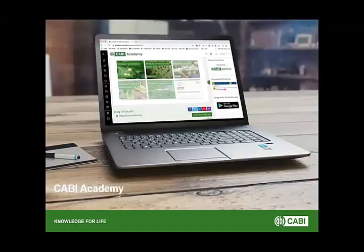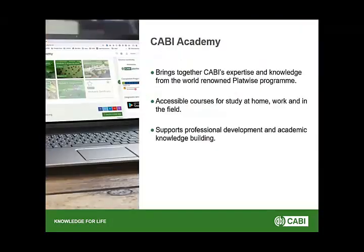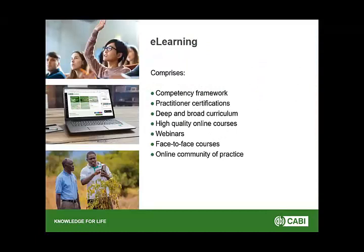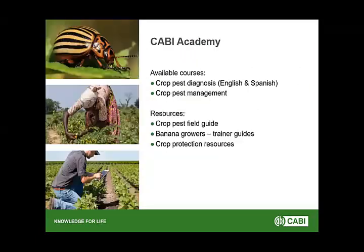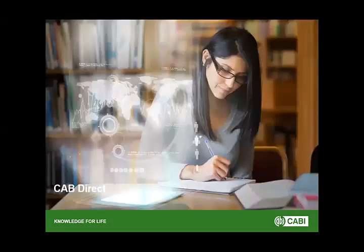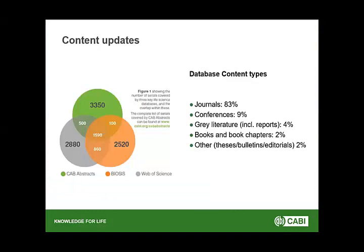We also have the CABI Academy, which is mainly the e-learning part of CABI. We currently have two courses: one called Crop Pest Diagnosis and one called Crop Pest Management. We also have databases with a lot of journal content, conference proceedings, grey literature, books, and chapters.